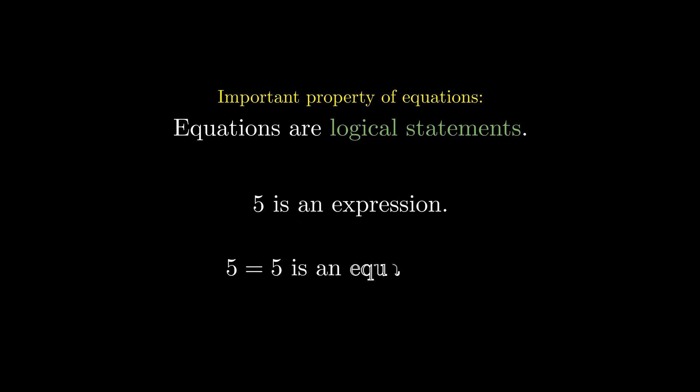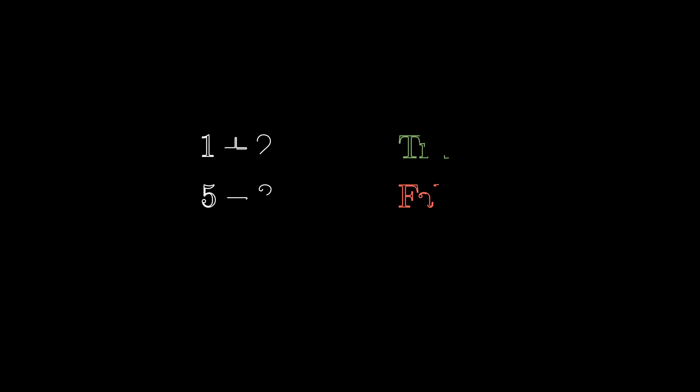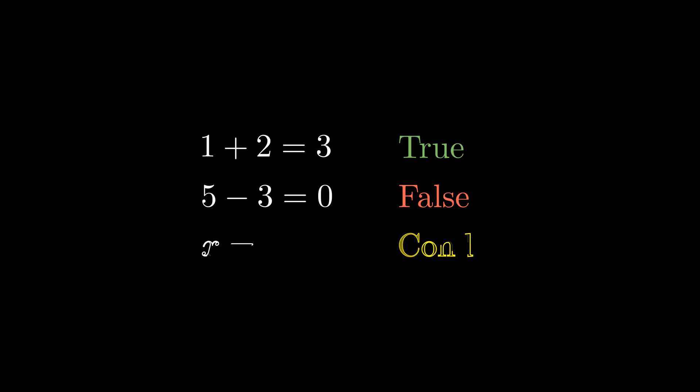5 is considered an expression because it doesn't have an equal sign to be evaluated as true or false. While some equations are always true or are always false, some equations, like x equals 1, are conditionally true or false, depending on the values of the variables.